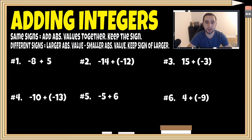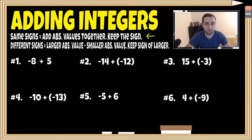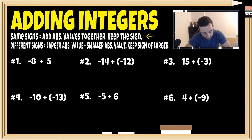In this video, we're gonna talk about how you add integers utilizing absolute value. There are two rules we're going to talk about. If your numbers have the same exact sign — both positive or both negative — we're gonna utilize the same signs rule. Whereas if we have different signs, like a number's positive and the other is negative, we're gonna utilize the different signs rule.